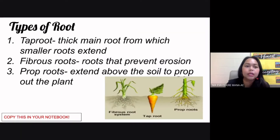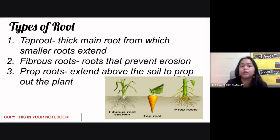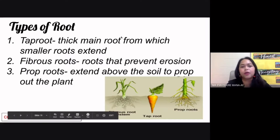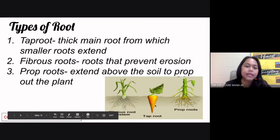Now there are three types of roots. The first one is the tap root. When you say tap root, there is a thick main root from which smaller roots would extend. One example for this would be your carrot — the part which you actually eat is an example of a tap root.